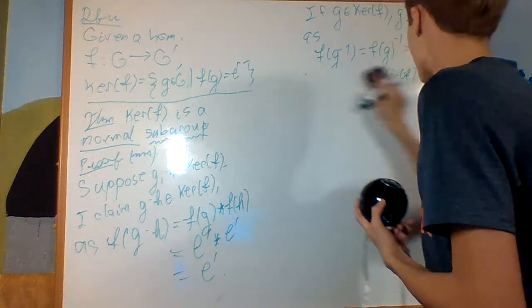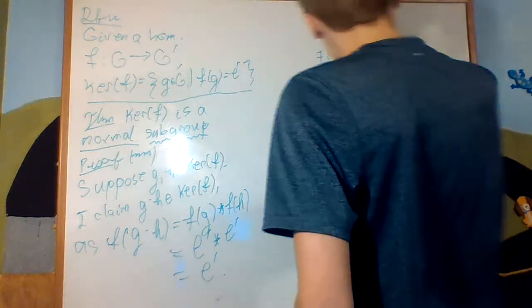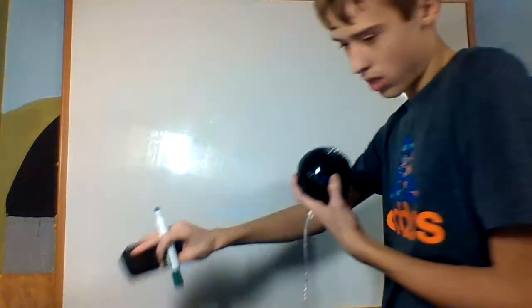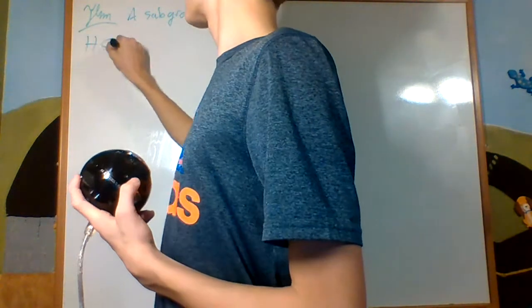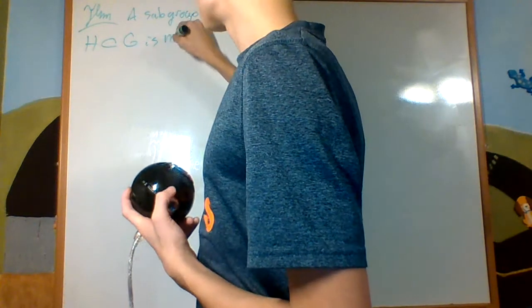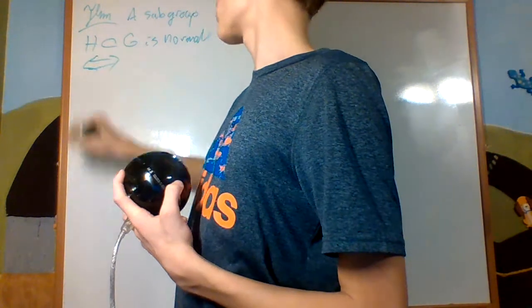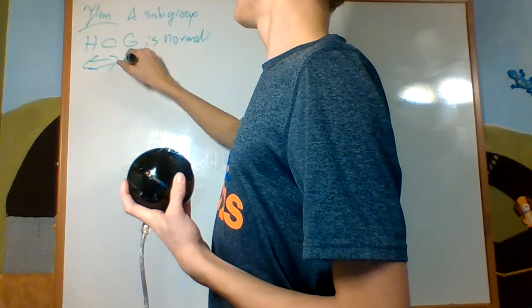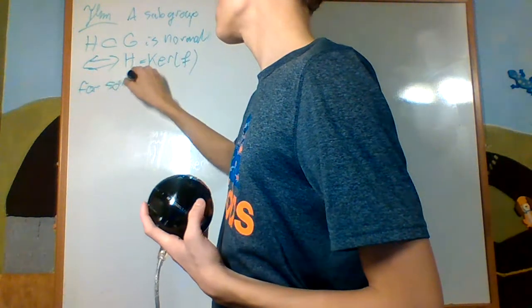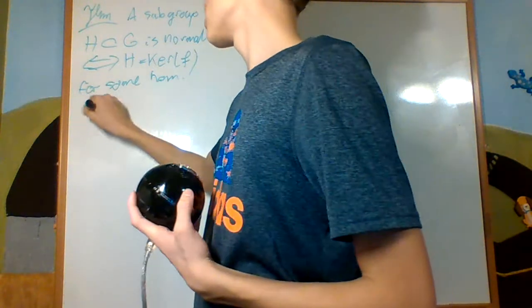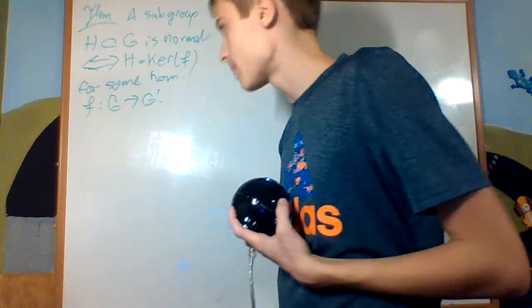What's the use of this? It proves a very important theorem, which uses the quotient group from my previous video. Theorem: a subgroup H of G is normal if and only if H is equal to the kernel of a homomorphism F for some homomorphism F from G into G prime.